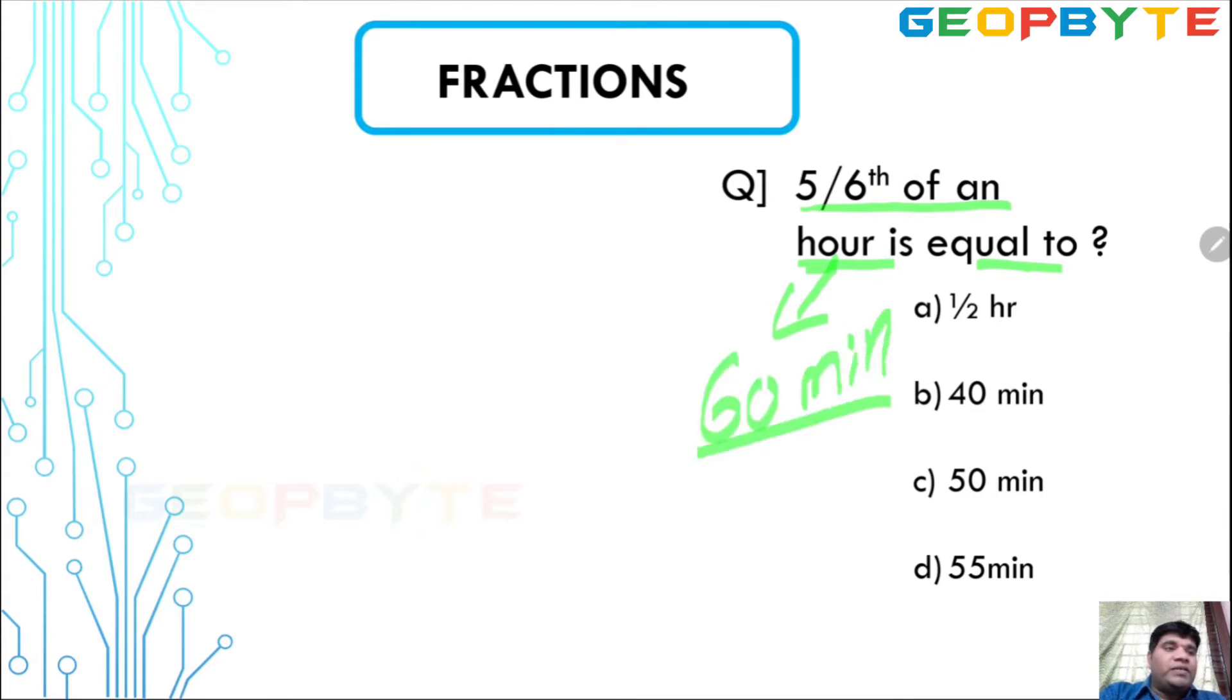60 minutes. So 5 by 6 into 60. So 60 by 6, 50 minutes. Answer here. Option C. Got it students. This is actually 2019 examination bit.